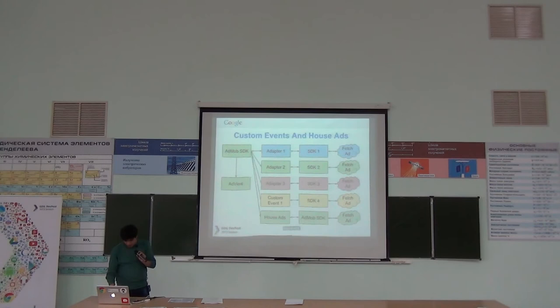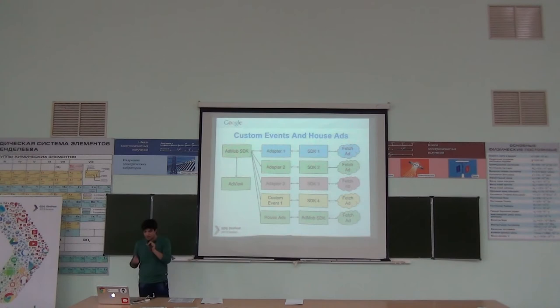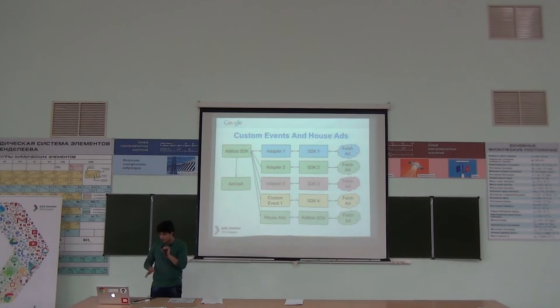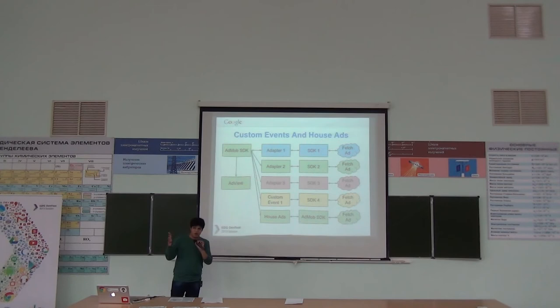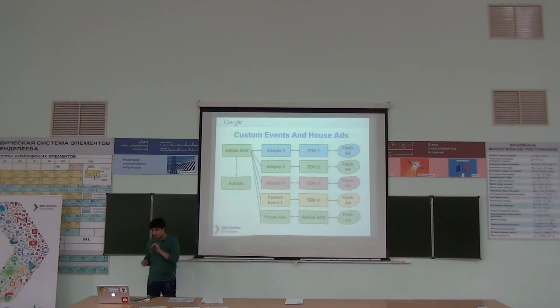Custom events work similarly, but with only 15 partner networks available. If you want another partner that guarantees higher CPM in a specific region like Russia, you can create your own adapter — the custom event code is available in the tutorials and the SDK can be downloaded from their site. House ads are your own ads: for example, if I have two apps and want to promote one through the other, I can make house ads available only for Australia to increase downloads there.